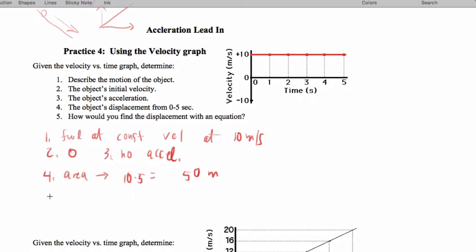And the way we'd get the displacement from the equation is we could say that x is v naught t plus x naught. We could take this equal to zero and just say that x is v naught times t, which is 10 times 5, which is 50 meters.